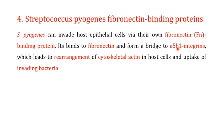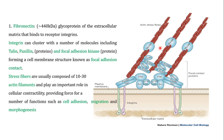The specific alpha subunit is α5 and the specific beta subunit is β1; therefore, the particular integrin to which fibronectin and hence the fibronectin binding protein bind is known as the α5β1 integrin. When the fibronectin binding protein binds fibronectin and bridges to the α5β1 integrin, it leads to rearrangement of the cytoskeletal actin in the host cell, which helps in the uptake of the invading bacteria.